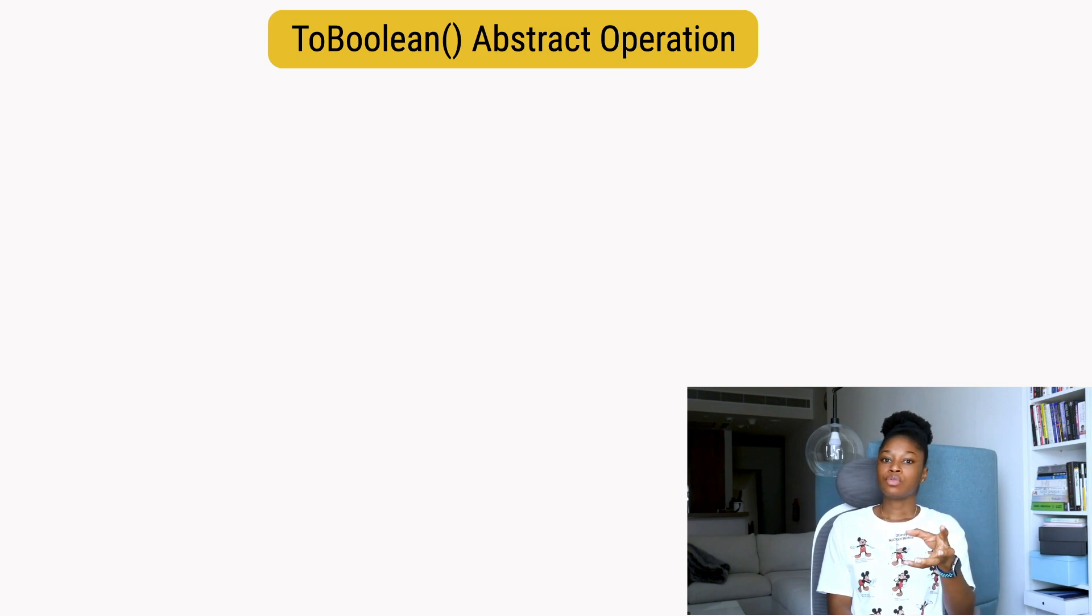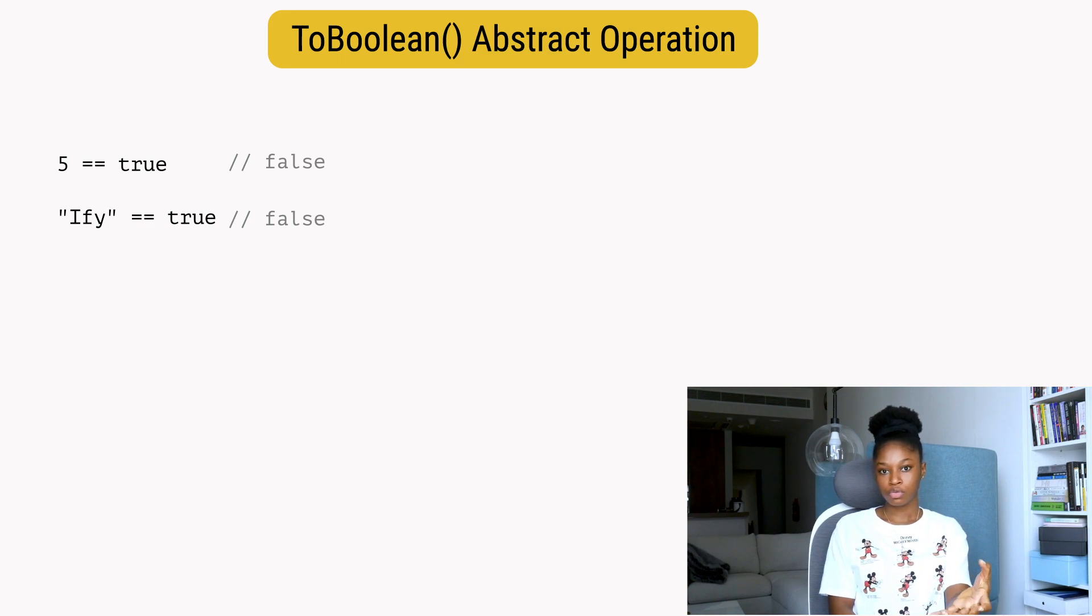Another important thing to note is that the fact that a value is considered truthy doesn't mean it's equal to true. In fact, the only value in JavaScript that is loosely equal to true is the number one. For a better understanding on how booleans are compared using the abstract equality or loose equality operator, let's see what the spec says.